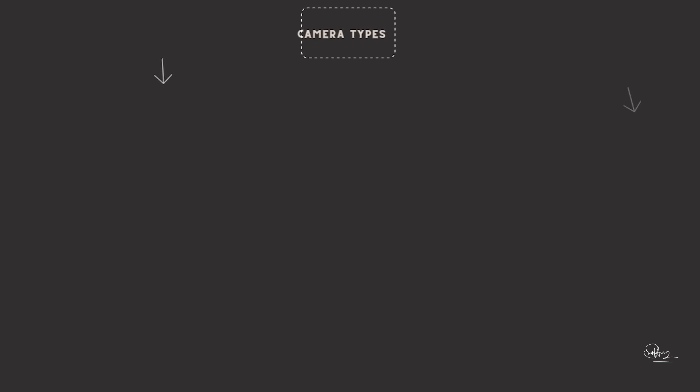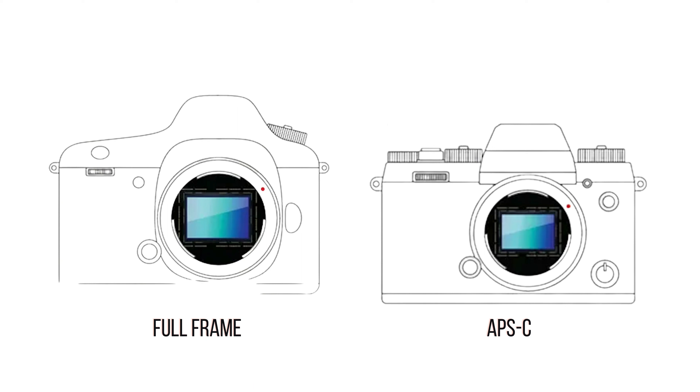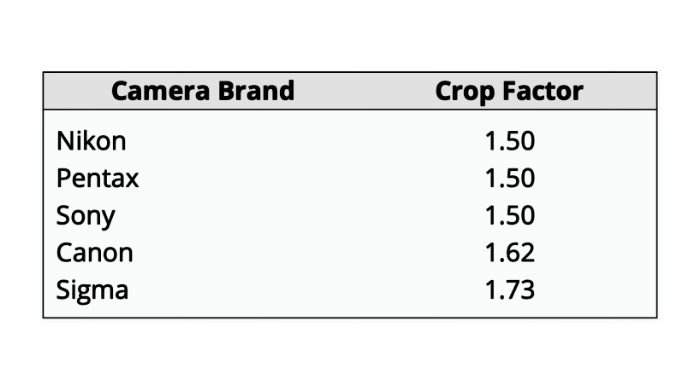Every camera brand has two types of cameras nowadays — a DSLR and a mirrorless. For simplicity, we'll discuss only about DSLRs. Every DSLR camera has two types of sensors: full frame and APS-C crop sensor. A full frame camera has a big sensor, and whatever the focal length of your lens is, it will give you that same focal length on that camera.